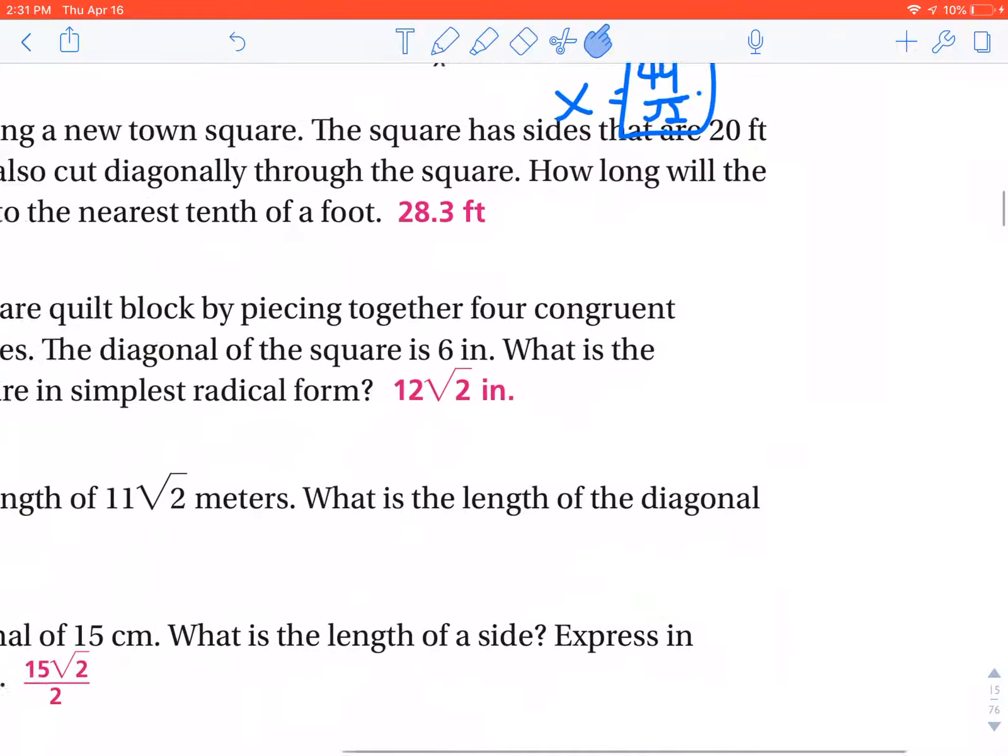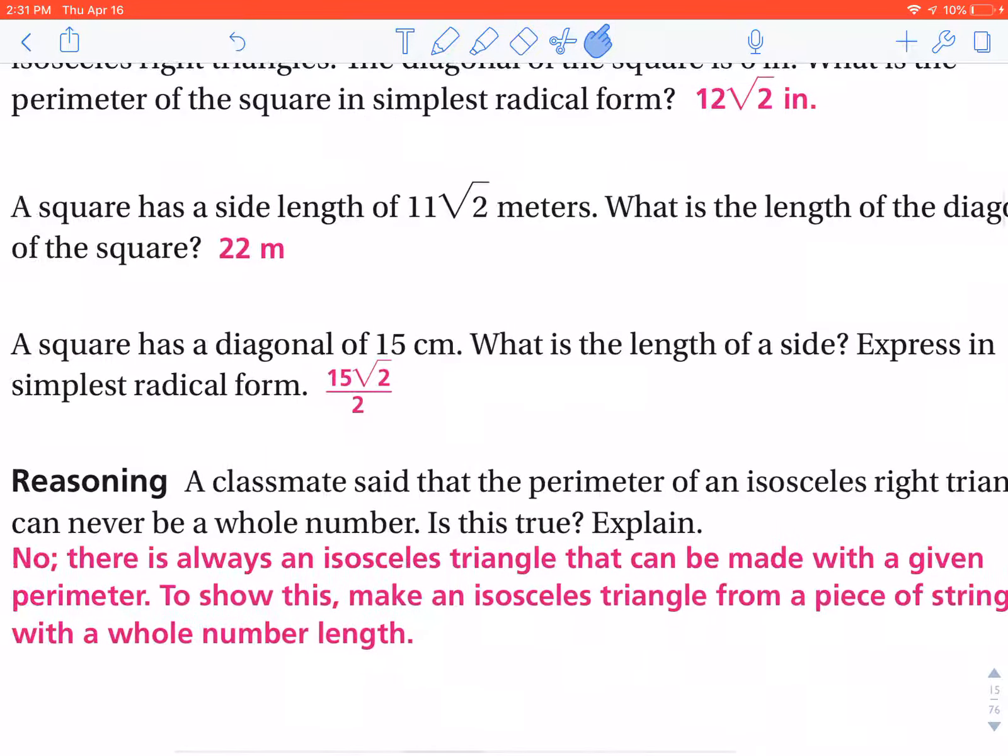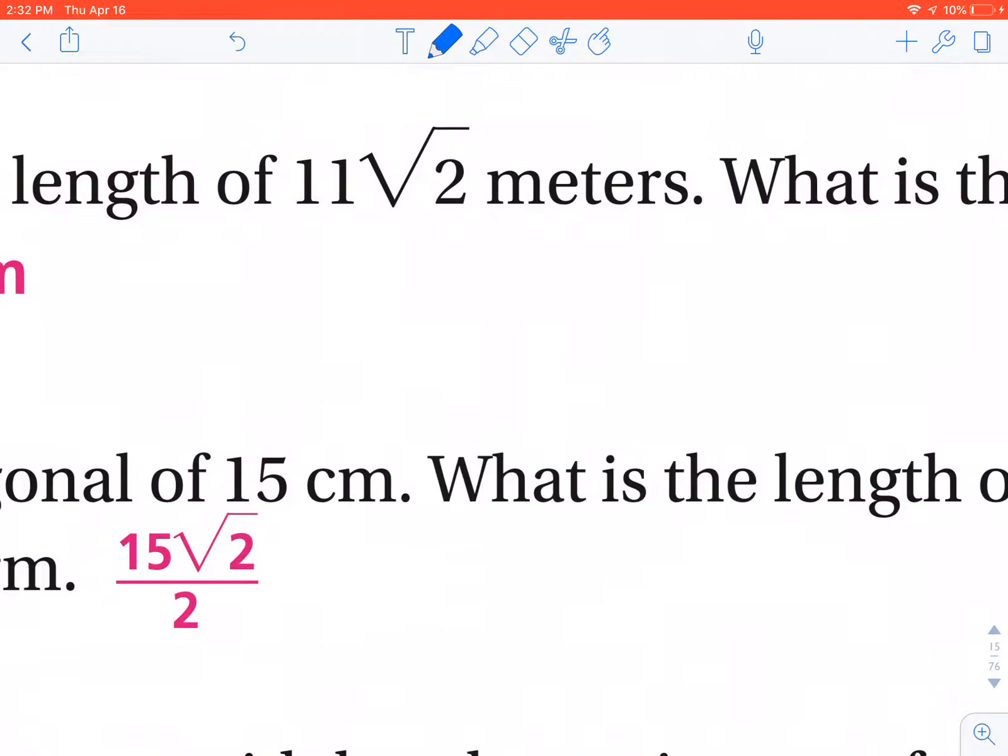Lastly, number 8. A square has a side length of 11 radical 2. They want to know what the length is of the diagonal. As I said in the other video, all squares, when you cut them in half, create 45-45-90 triangles. So I'm just going to ignore the fact that it's even a square, and I'm just going to draw my 45-45-90 triangle.